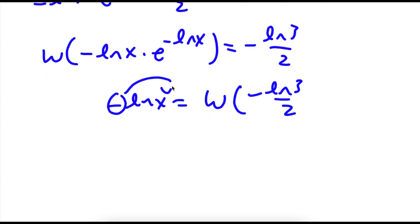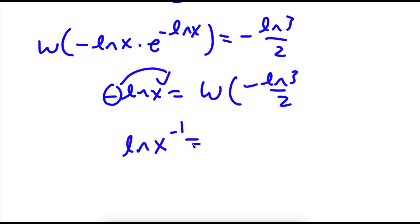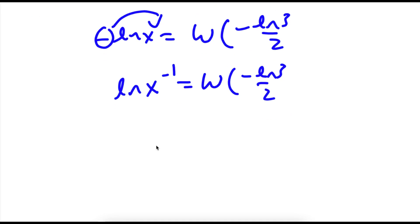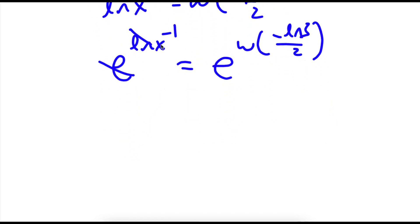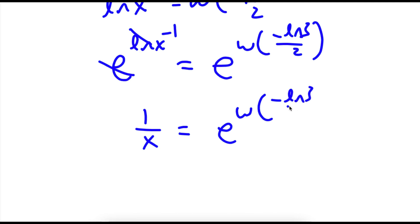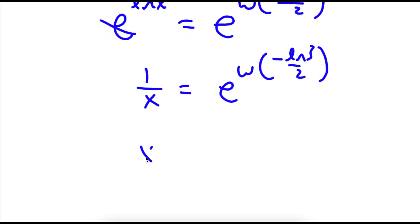Now I can move this back to the front, so I have ln of x to the power of negative 1 is equal to W of negative ln 3 over 2. Taking e to the power of both sides, e and ln cancel, and x to the power of negative 1 — which is 1 over x — remains. So I have 1 over x is equal to e to the power of W of negative ln 3 over 2, which means x is equal to 1 over e to the power of W of negative ln 3 over 2.